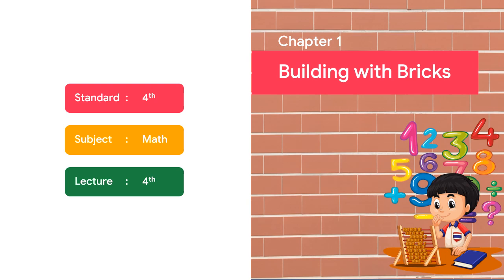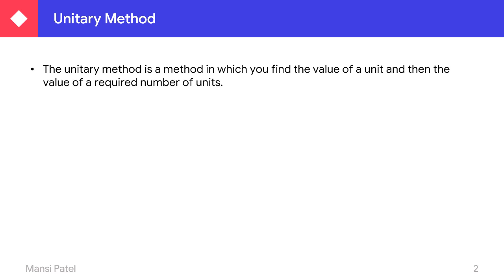Today we are going to study about the unitary method — how you can find out the value of many things from one thing's value, and how we can find out the value of one thing from many things. The unitary method is a method in which you find the value of a unit — a unit means one thing — and then the value of the required number of units.